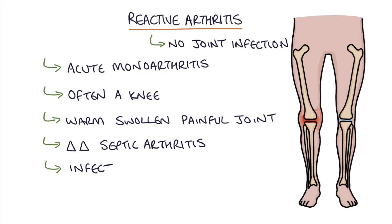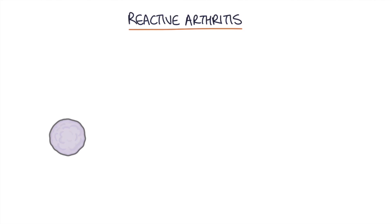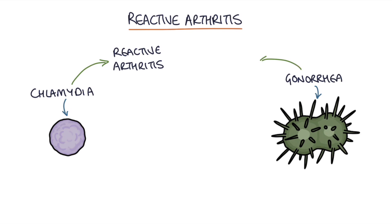The most common infective triggers for reactive arthritis are gastroenteritis or sexually transmitted infections. Chlamydia is the most common sexually transmitted infection that causes reactive arthritis. Gonorrhea commonly causes a gonococcal septic arthritis, so with a recent STI you need to think about both reactive arthritis and septic arthritis.